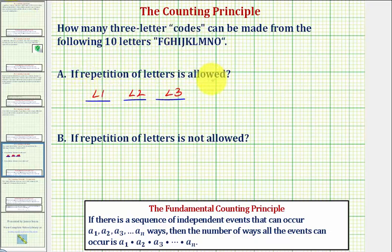And again, repetition is allowed, and there are ten letters, so there are ten ways to select the first letter. So we'd have ten times, again because repetition is allowed, there'd be ten ways to select the second letter, followed by ten ways to select the third.